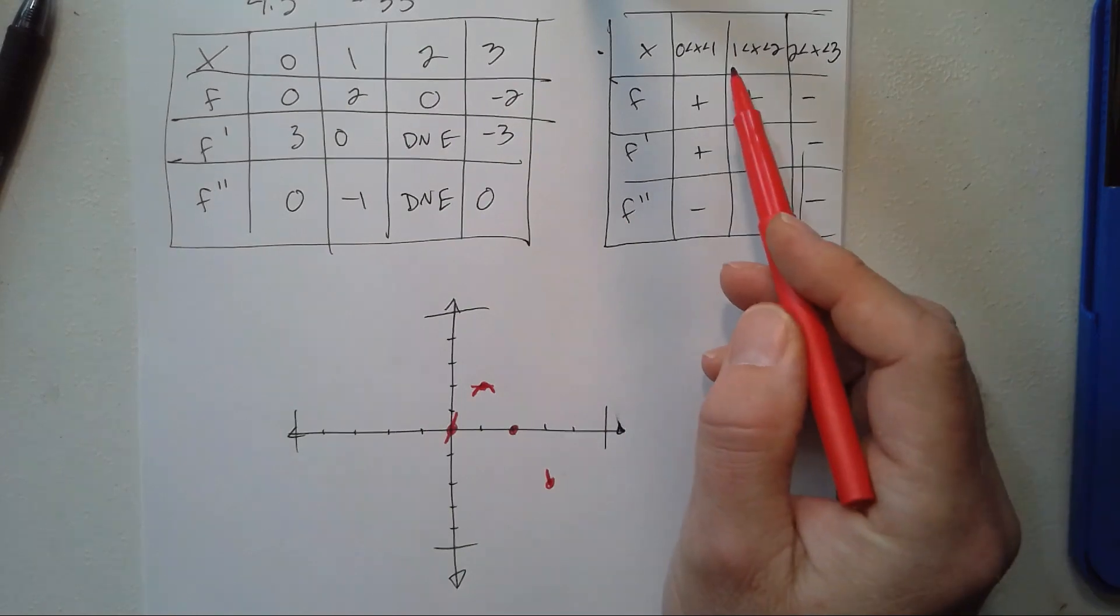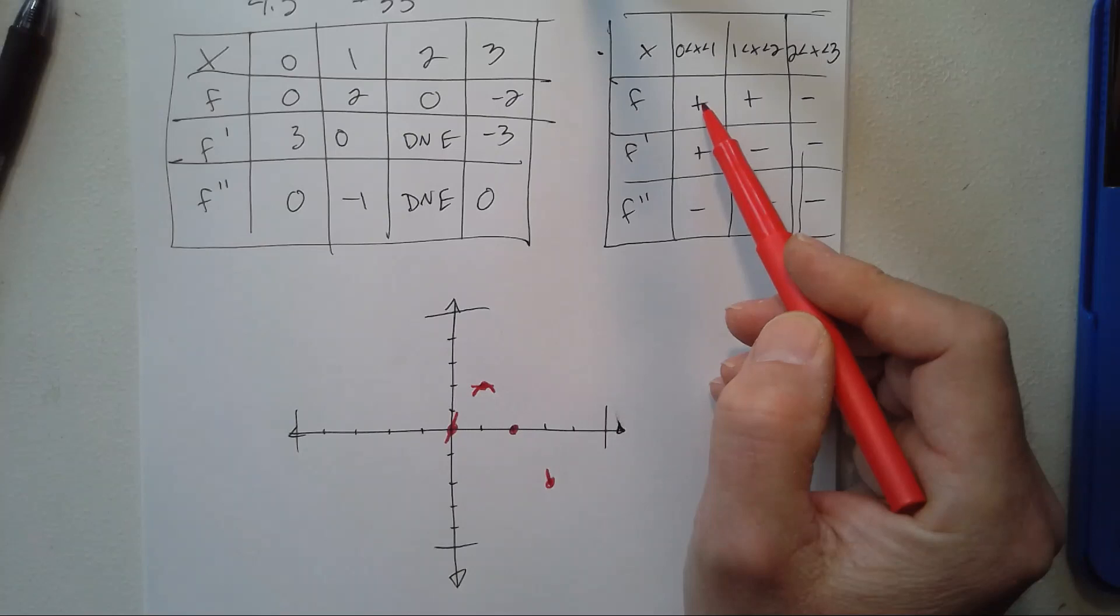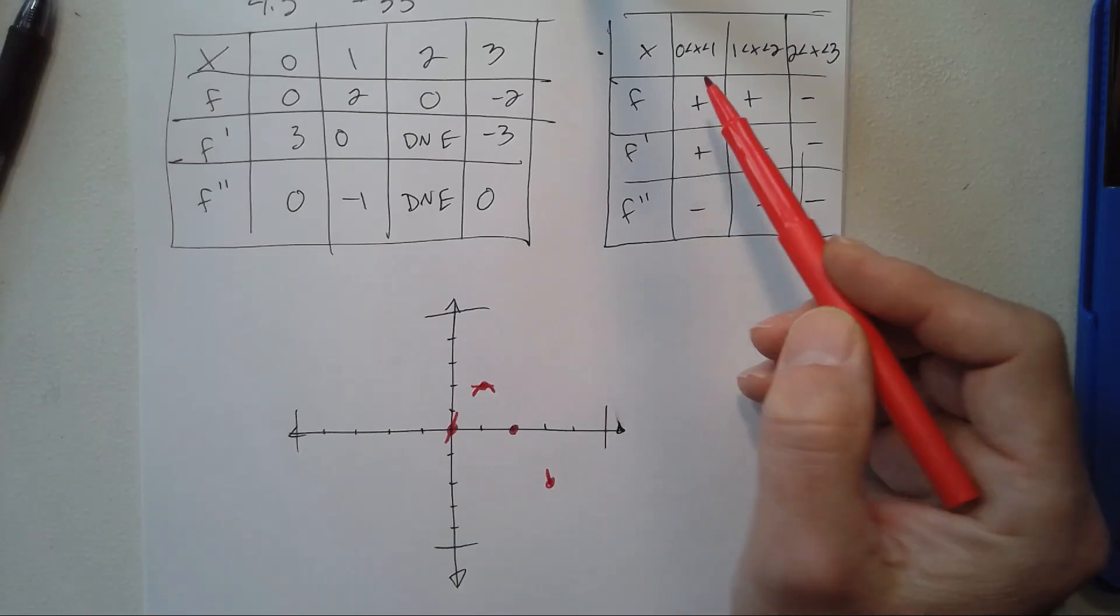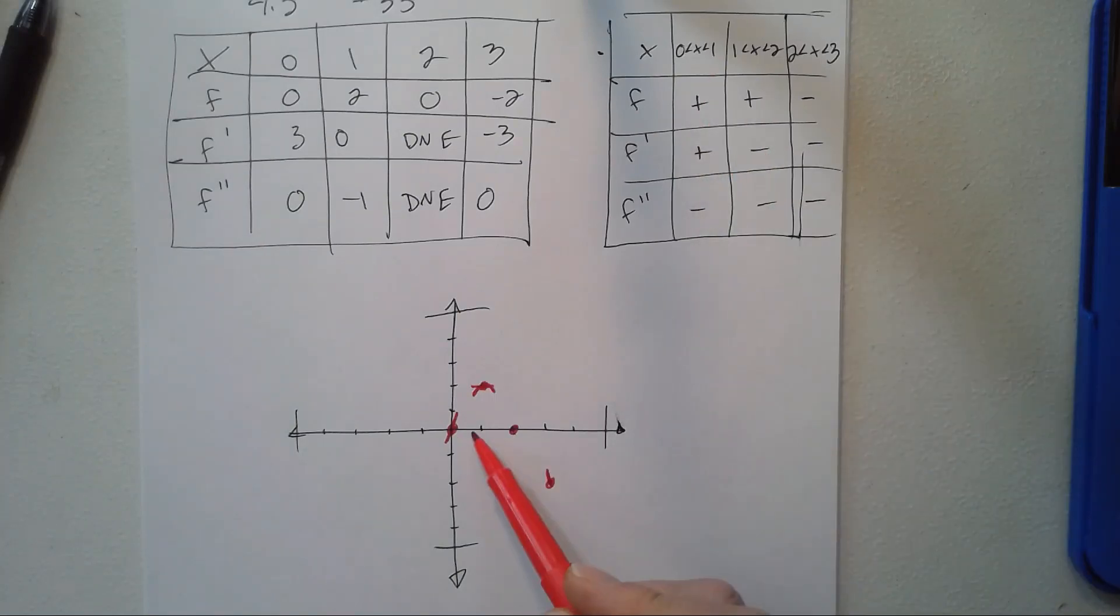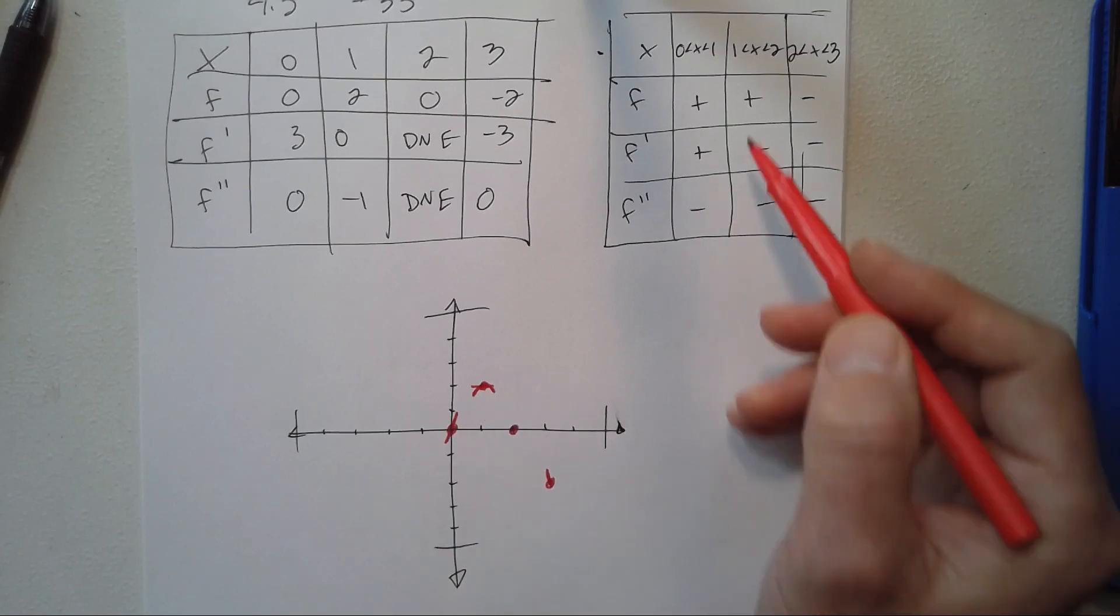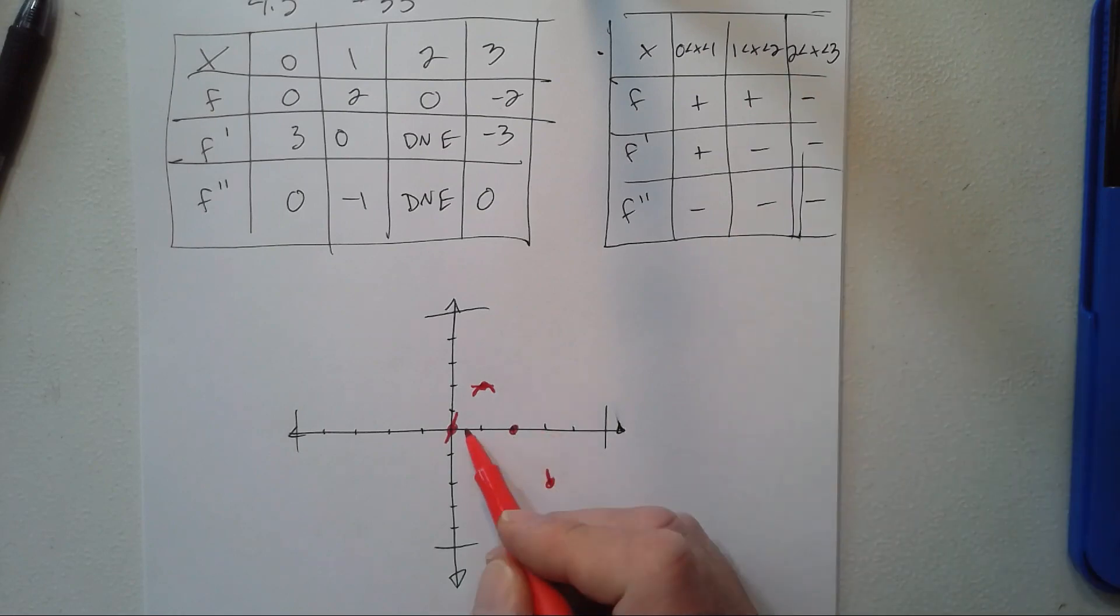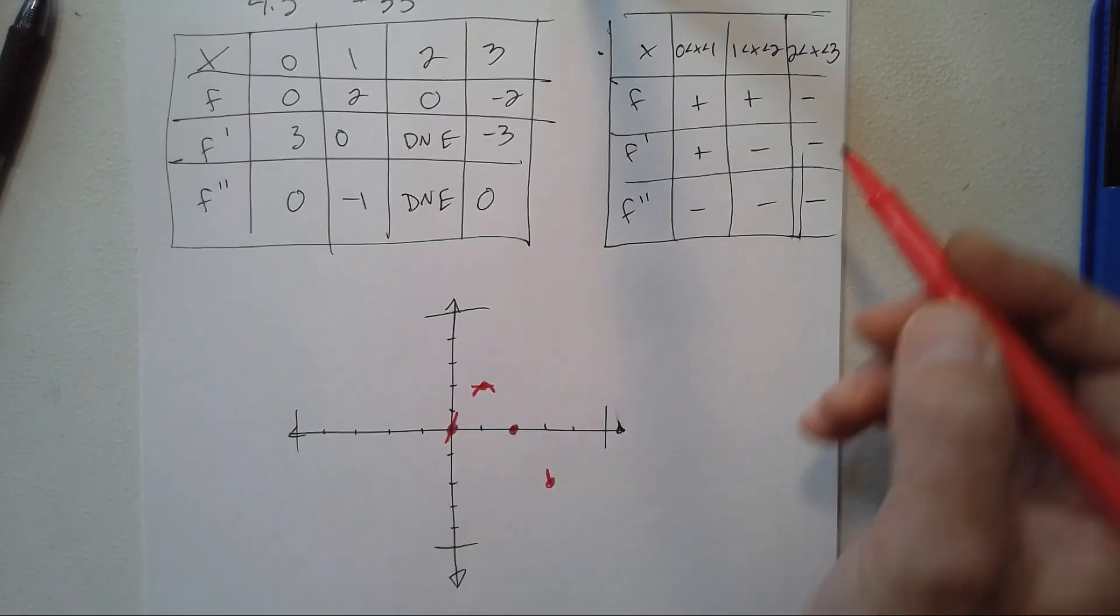Let's look at the second chart. It says between 0 and 1, our function is positive—it's always above the x-axis. Between 1 and 2, it's also positive, so from 0 to 2 it's always above the x-axis. Then from 2 to 3, it's always below the x-axis.